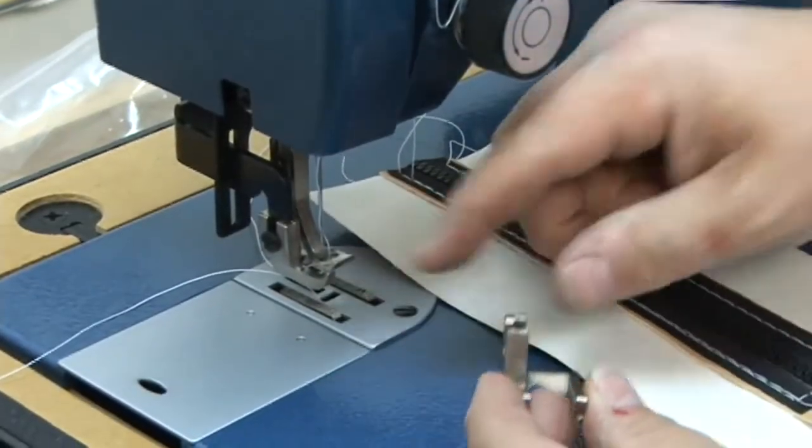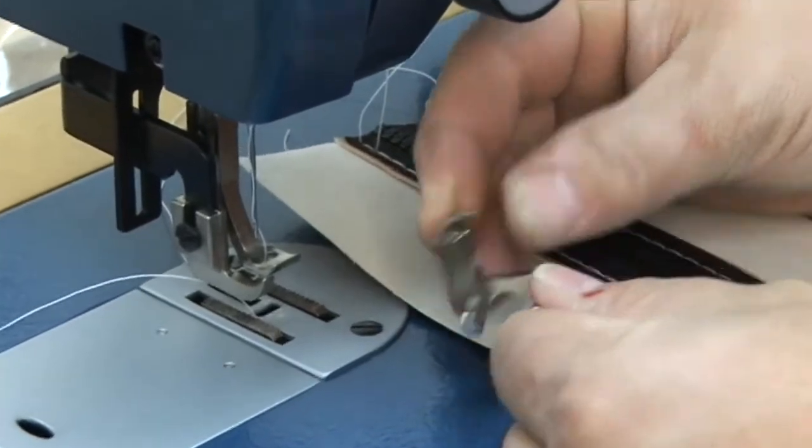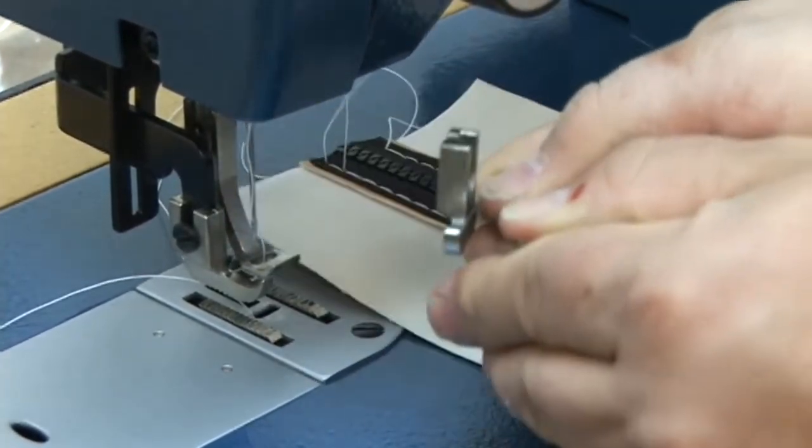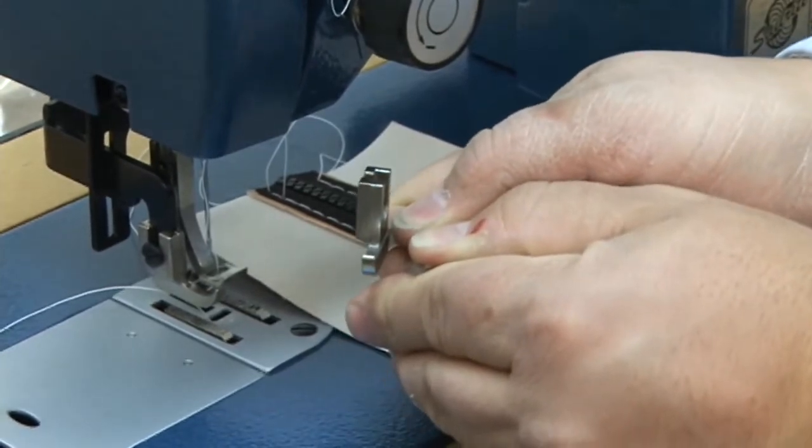So we have our left zipper foot on and this is the original foot that's been removed. You can see that essentially the left zipper foot is just this part, omitting the part that I'm covering with my thumbs.